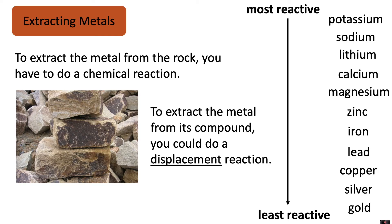Here's the reactivity series of metals, and in red I'm going to place an element that is a non-metal called carbon. Carbon is a black powdery substance and it's a very cheap and readily available chemical, so it's really useful in the process of extracting metals.